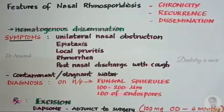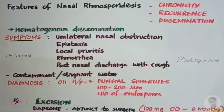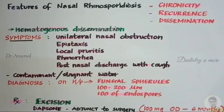The treatment of Rhinosporidiasis involves excising the polyp — excision of the polyp is the primary treatment. As an adjunct to surgery, Dapsone will be administered to the patient. The dosage of Dapsone is 100 mg once daily for 6 months. Dapsone can prevent the maturation of spores.